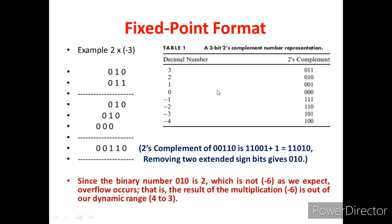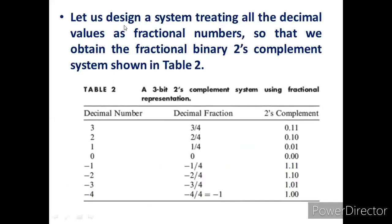To overcome this overflow problem, we consider representing decimal numbers in fractional form. Let us design a system setting all decimal number values as fractional numbers, so that we obtain the fractional binary two's complement system shown in the table. Decimal numbers from minus four to three are divided by four to get fractions ranging from minus one to three-fourths. The respective values are: 3/4 = 0.11, 2/4 = 0.10, 1/4 = 0.01, 0 = 0.00, -1/4 = 1.11, -2/4 = 1.10, -3/4 = 1.01, -4/4 = minus one = 1.00.